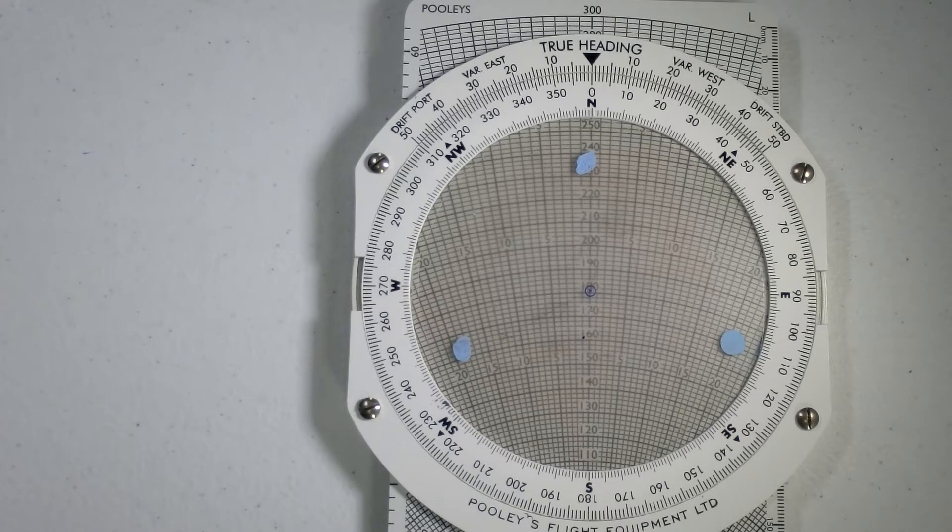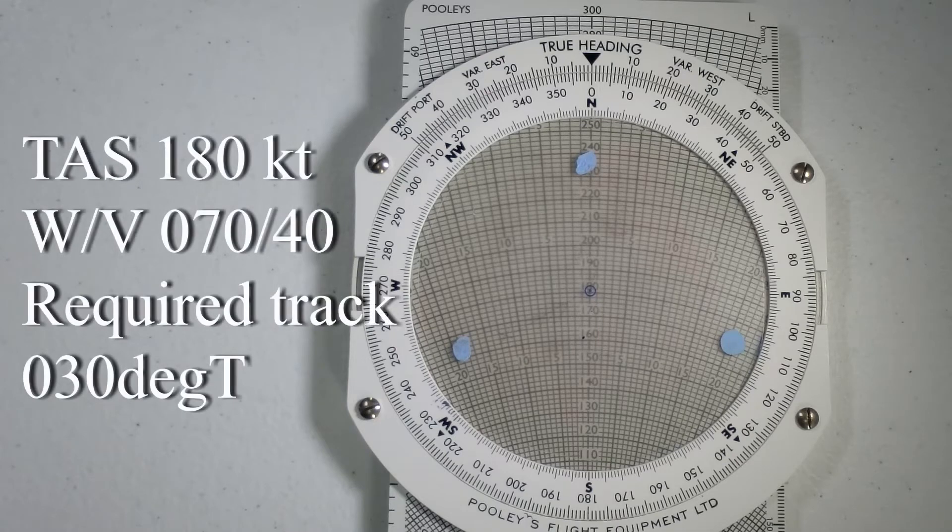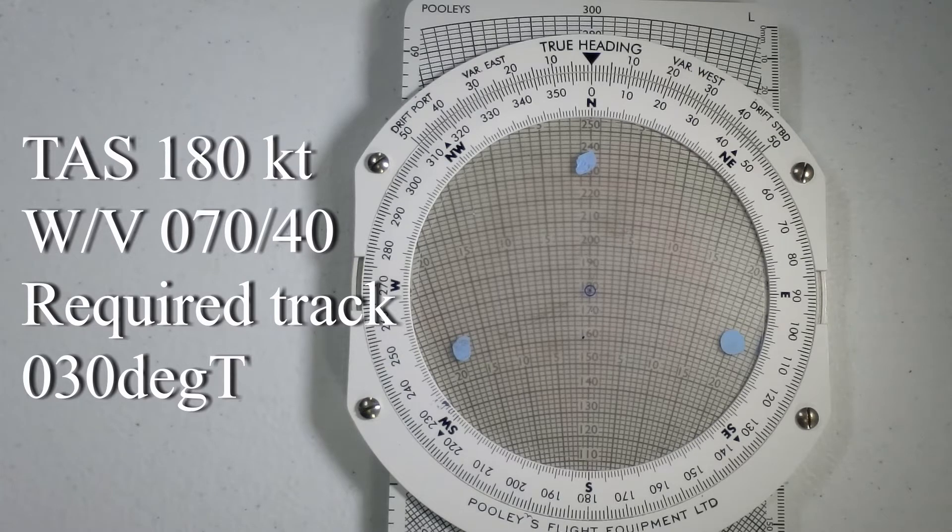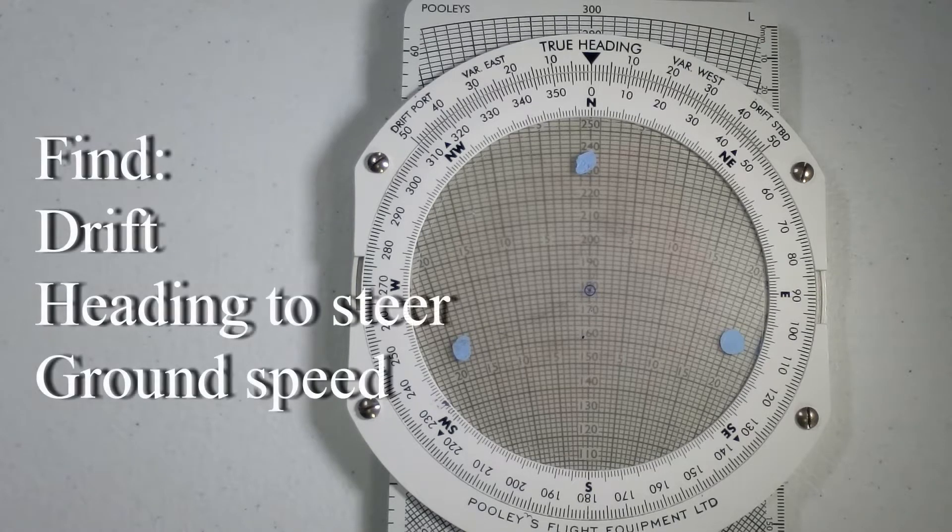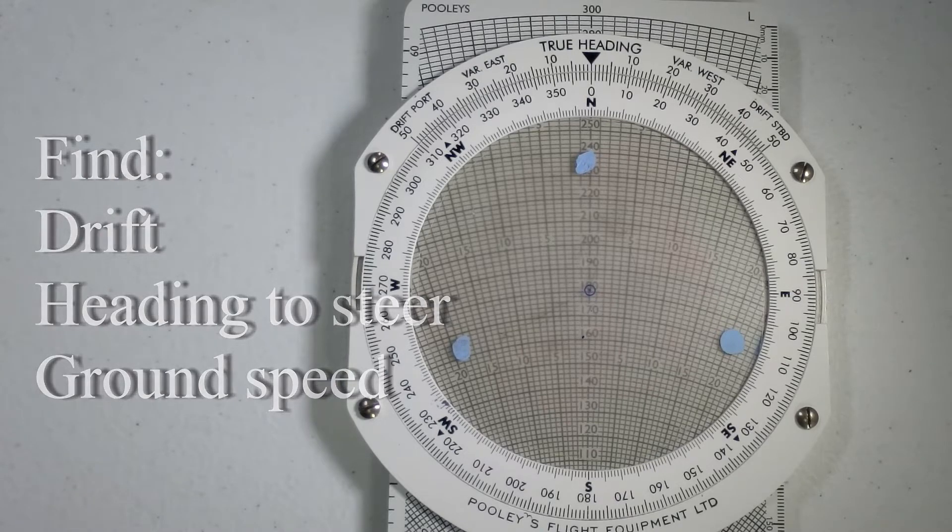In this example, we shall use a given true airspeed of 180 knots, a wind velocity of 070 at 40, required track of 030 degrees true, and we need to find what our drift is, as well as the heading to steer and our ground speed.